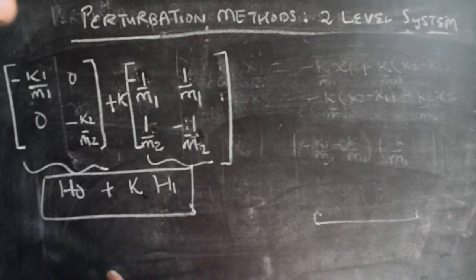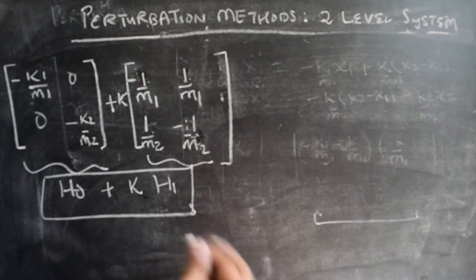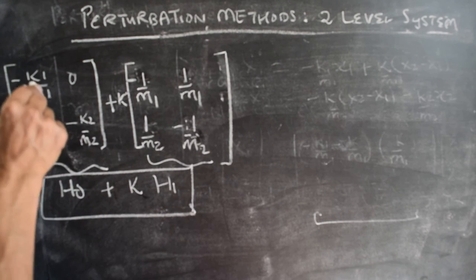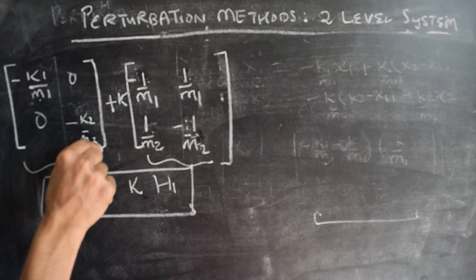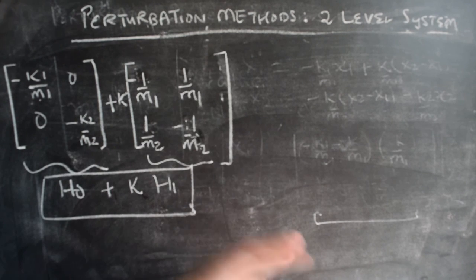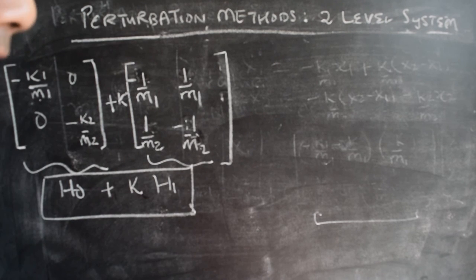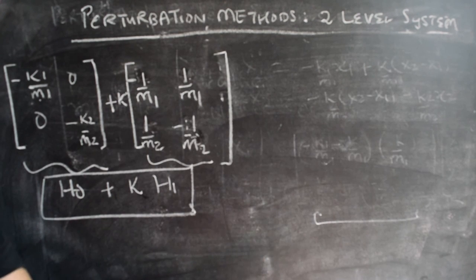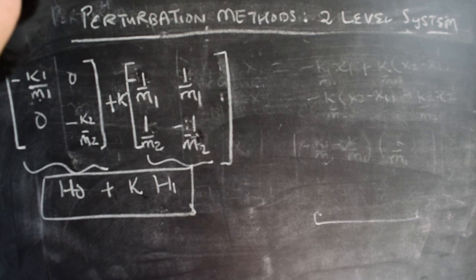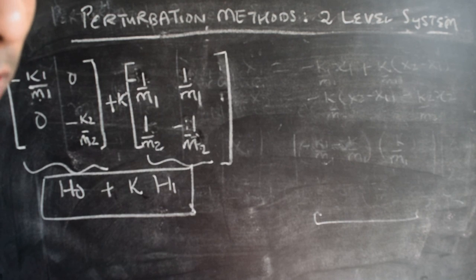In the next part of the video we'll solve for the eigenvalues of this matrix exactly, and we'll see two cases emerge: one where k1/m1 differs from k2/m2, corresponding to non-degenerate eigenvalues and regular perturbation, and another where they are equal, corresponding to degenerate eigenvalues requiring singular perturbation methods. I hope you'll find these next few videos interesting — see you soon, thanks for watching.